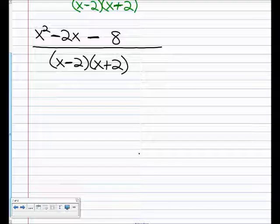And if you look in the numerator, can you think of two numbers that multiply to give you negative 8 and add to give you negative 2? Yes. And what is it? X minus 4. Very good. It is x minus 4 times x plus 2.